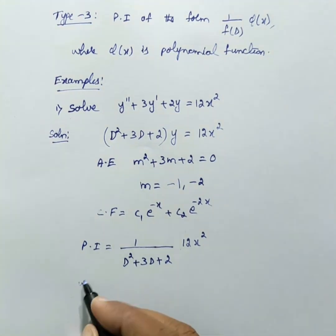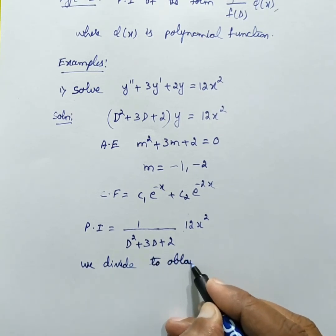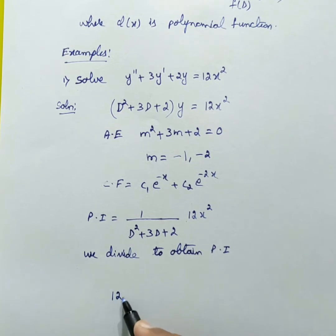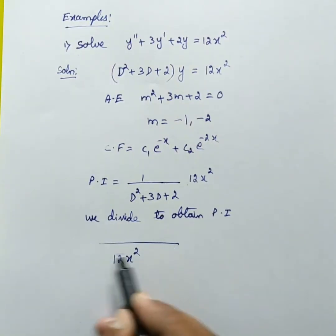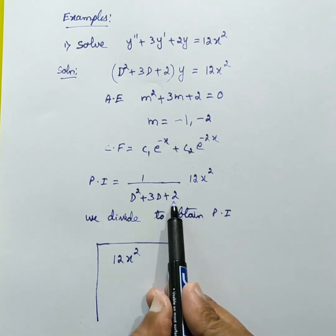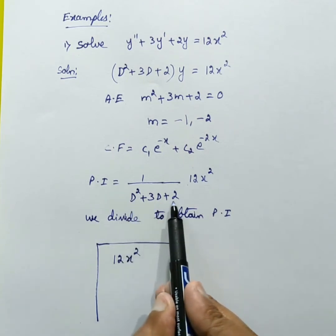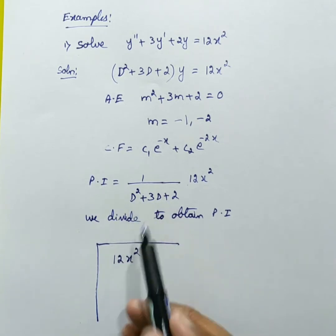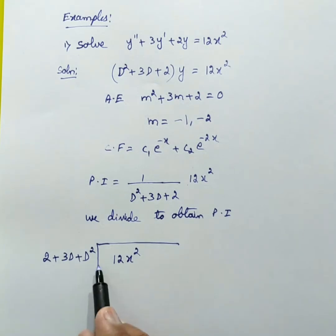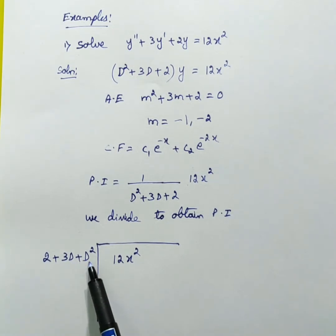To perform the division, we write 12x squared as it is. The operator D squared plus 3D plus 2 is rewritten in increasing order of D: first the constant term, then the power of D. So it becomes 2 plus 3D plus D squared. Whenever you write down this expression, it should always be in increasing power of D: first the constant term, next power of D equal to 1, then power of D equal to 2.